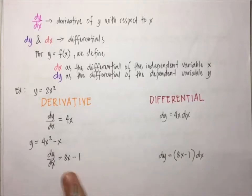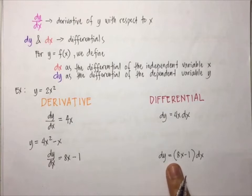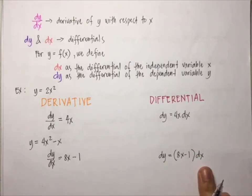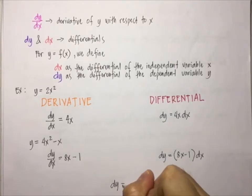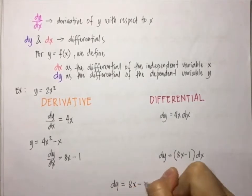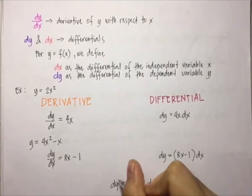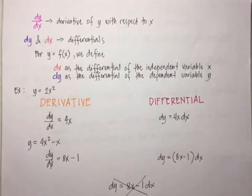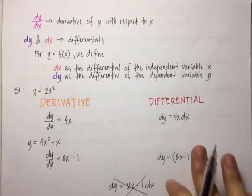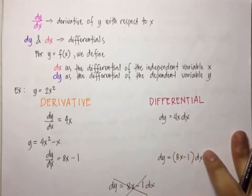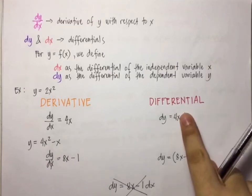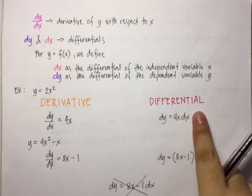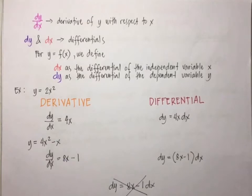The differential of y equals 4x squared minus x is written as dy equals (8x minus 1) dx, and not dy equals 8x minus 1 dx without parentheses — that form is not considered correct. That's the difference between derivative and differential. We need to be familiar with differential because the integral always comes with a differential; otherwise the operation will be meaningless.